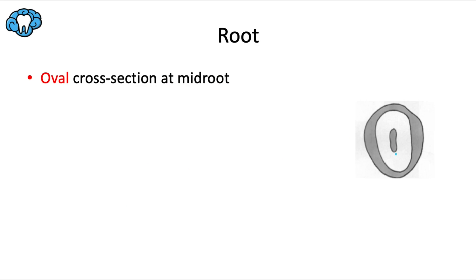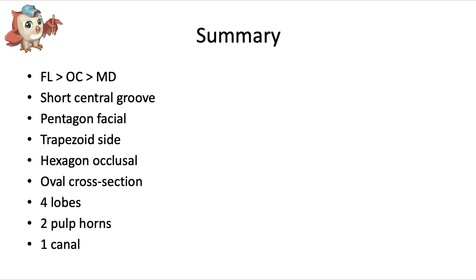Although the crown is hexagonal from the occlusal view — more of a rounded hexagon for this premolar — if we cut the tooth in cross section at the middle of its root, we would simply see an oval shape. To summarize: the facial-lingual dimension is slightly larger than the occlusal-cervical dimension, and the mesiodistal dimension is the smallest. The short central groove is probably its most prominent defining feature. It's pentagonal from the facial view, trapezoidal from the side view, hexagonal from the occlusal view, has an oval cross section, and primarily consists of four lobes, two pulp horns, and one pulp canal.